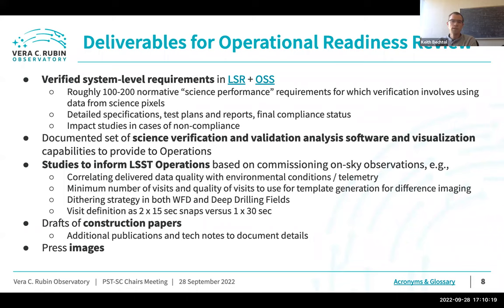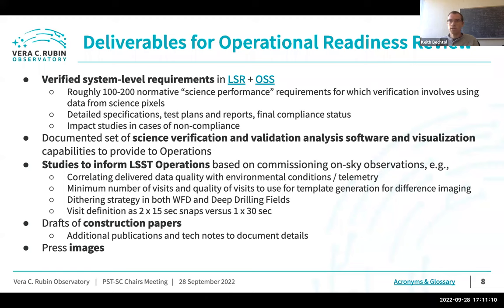We have a list of deliverables to have ready for the operations readiness review, which marks the transition between construction and the start of the 10-year LSST survey. The first is the verified set of system-level requirements from our top-level system requirements documents — the LSST System Requirements (LSR) and the Observatory System Specifications (OSS). There are something like 100 to 200 normative science performance requirements, with some overlap between the documents. That gives a sense of the scope of what we're trying to do.